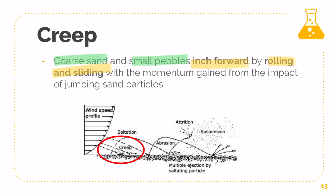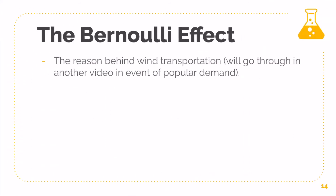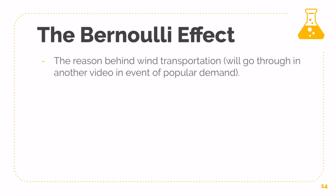As we cover the whole transportation section, remember that the most important process is saltation because it powers the rest. So when you need to compare between the different types of transportation processes, you know that saltation will play the biggest role. There's also something called the Bernoulli effect, which is the reason why all this transportation takes place — I'll only cover it if you want me to, as it can get a bit confusing, but it is a higher level of evaluation for the Aeolian series.